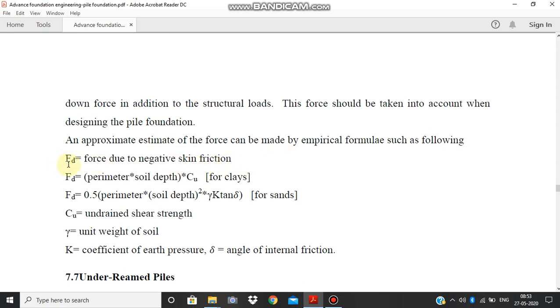We need to use an approximate estimate. We need to use an empirical formula where F_d is equal to force due to negative skin friction, and it is given by perimeter into soil depth into C_u. For sands, F_d equal to 0.5 into perimeter into soil depth squared into gamma K tan delta.